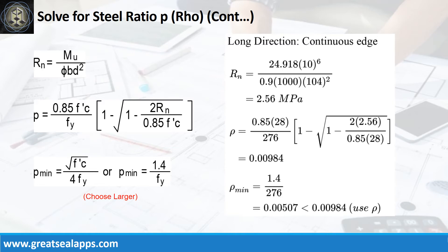Given long direction, continuous edge moment equals 24.918 kN per meter. Resistance factor equals 0.9. B equals 1,000 mm. And reinforcement ratio rho equals 0.00984.